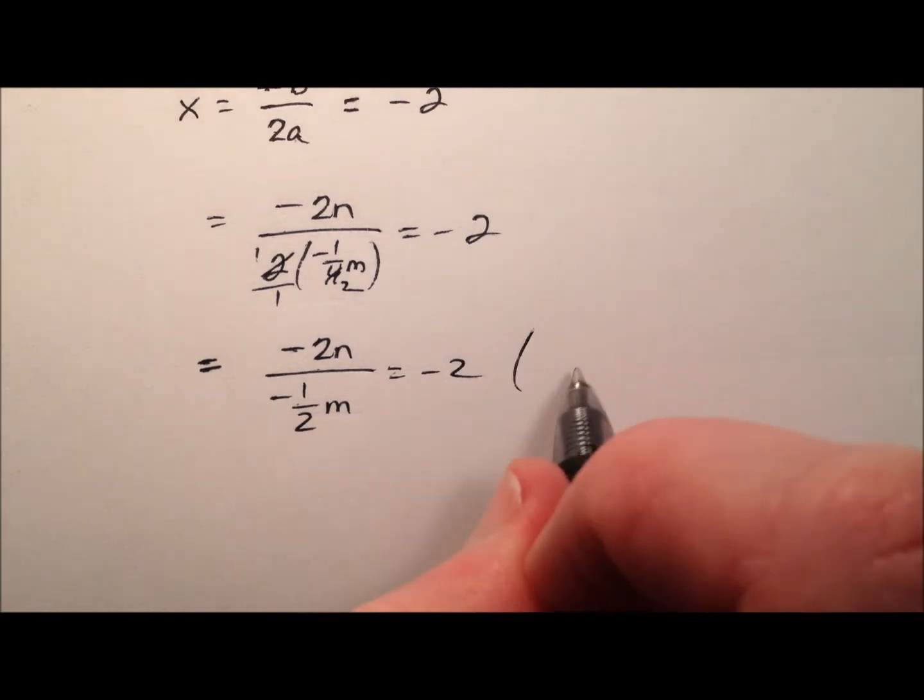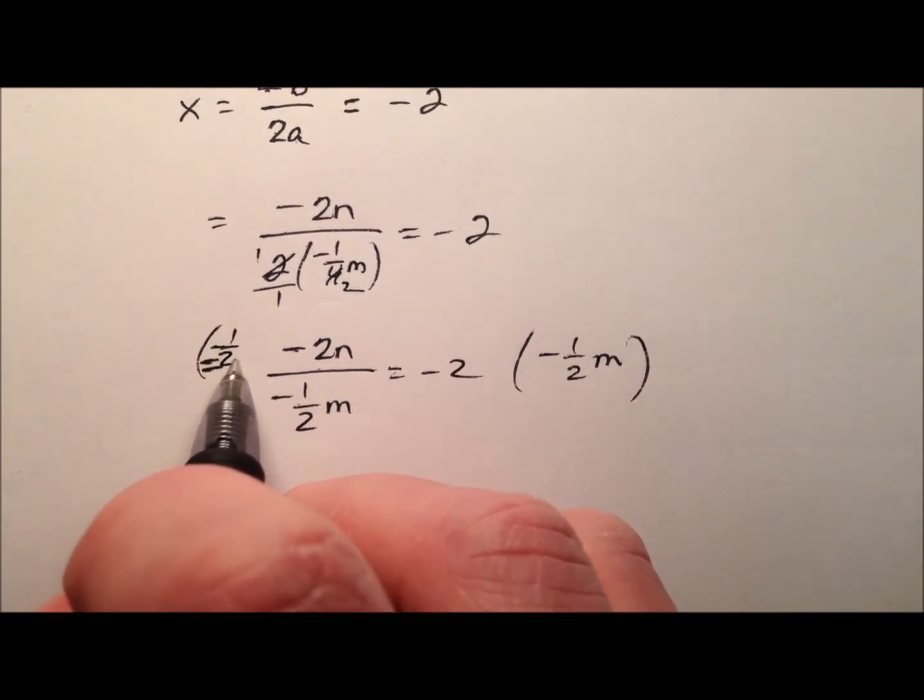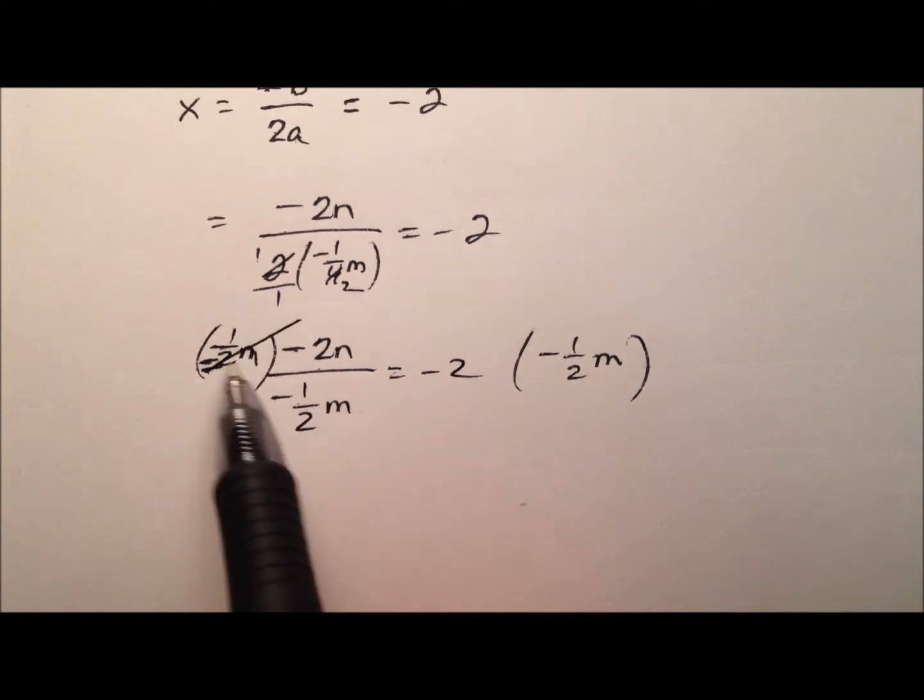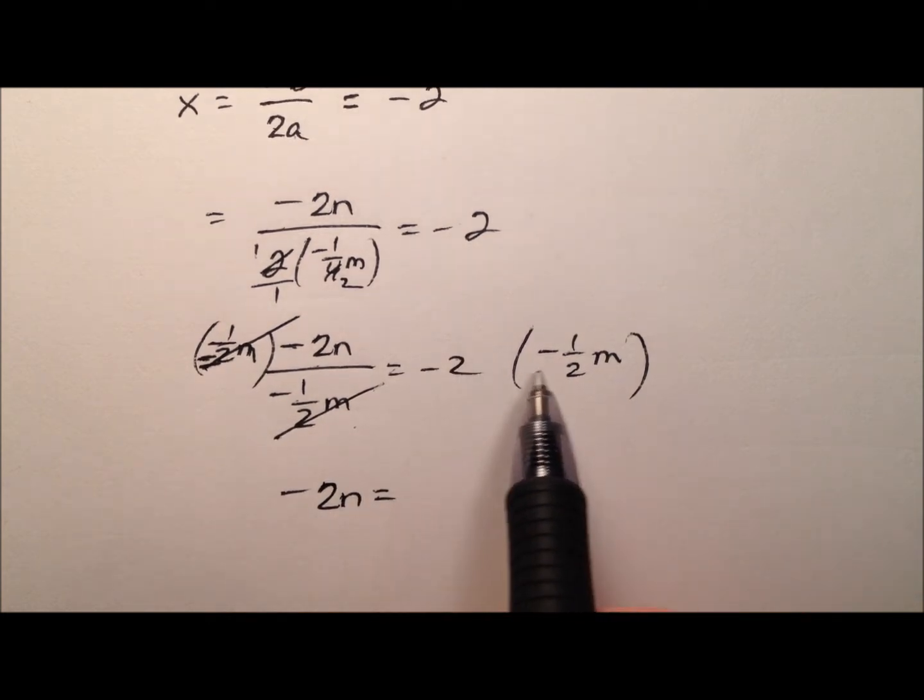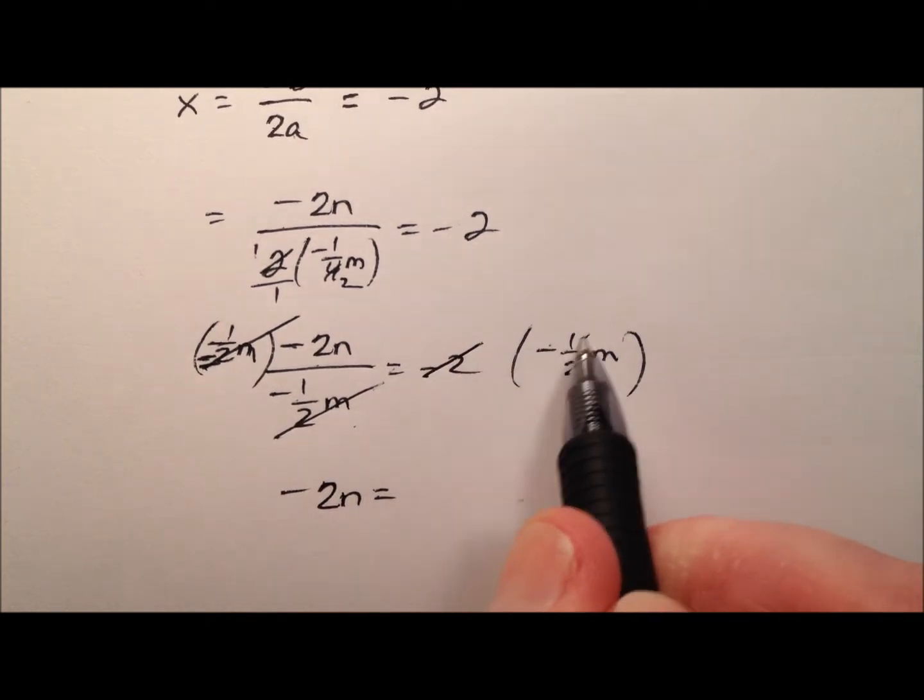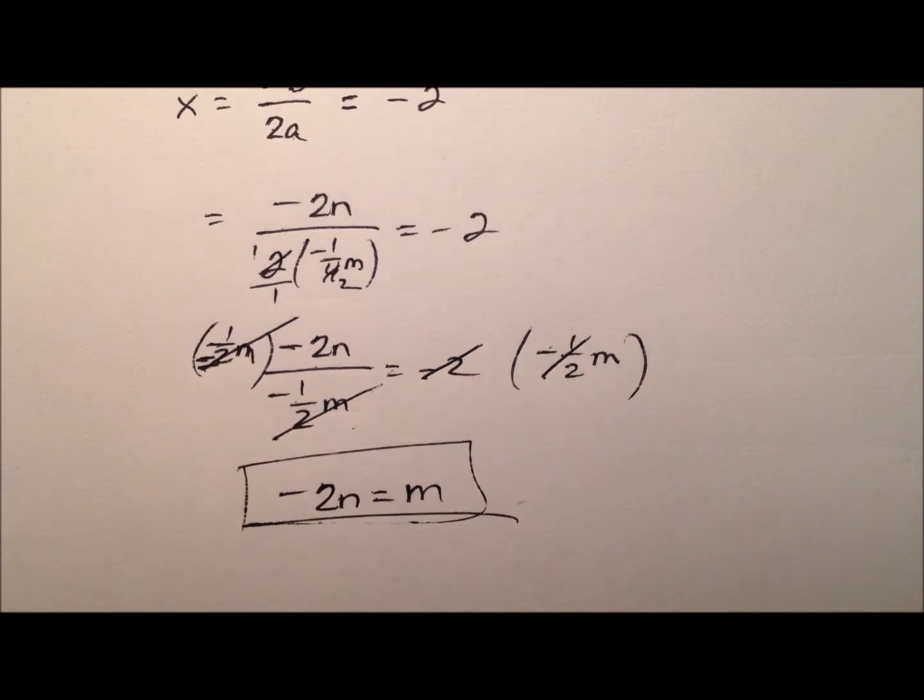So, let's just go ahead and multiply both sides of this equation by negative 1 half m. So, on the left side, those will cancel. I'll end up with negative 2n equals, so negative 2 times negative 1 half. Actually, that will all just cancel. So, m equals negative 2n.